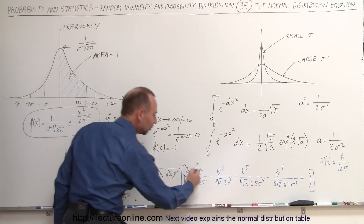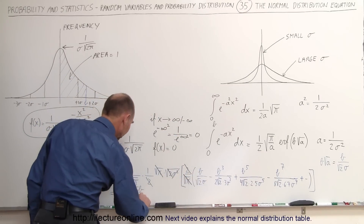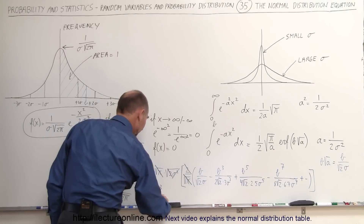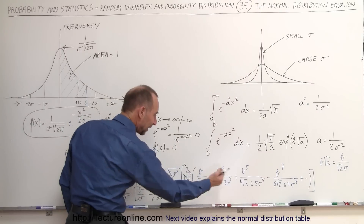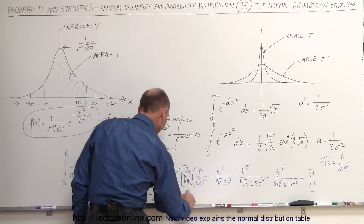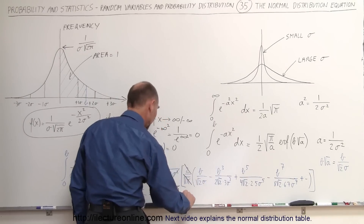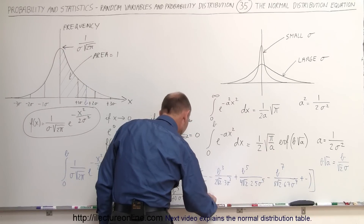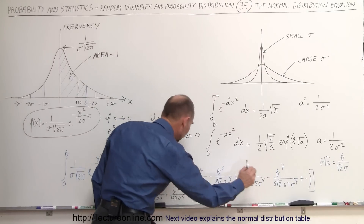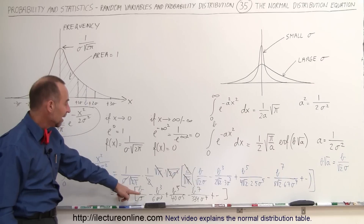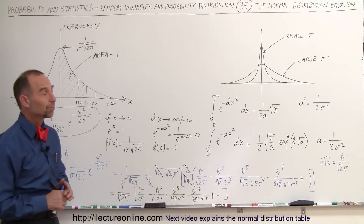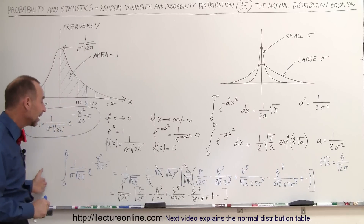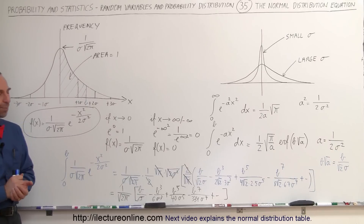We end up with 1 over the square root of 2 pi times the series: b divided by sigma, minus b cubed divided by 6 sigma cubed, plus b to the 5th divided by 40 sigma to the 5th, minus b to the 7th divided by 348 sigma to the 7th, and so on — the infinite series just continues. We evaluate this for any particular value of b and sigma, the standard deviation. Most people will simply go to the table and look up the values, but for those interested, this is how the tables were actually calculated. Examples will be shown in a future video.